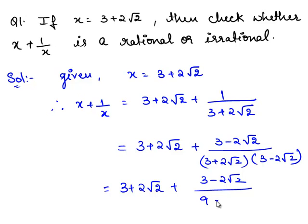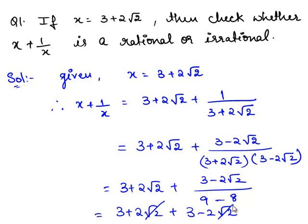So, this is equal to 3 plus 3, and plus 2 root 2 and minus 2 root 2 get cancelled. So, this is equal to 6 by 1, and the final answer is 6. Therefore, x plus 1 by x is equal to 6, which is a rational number.